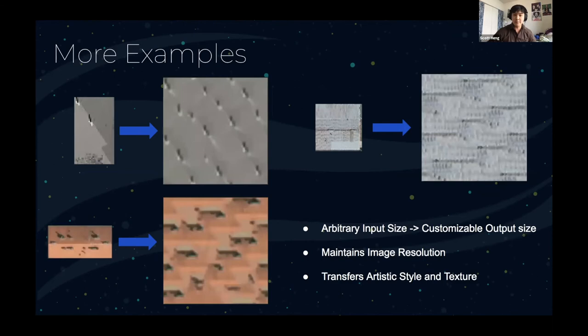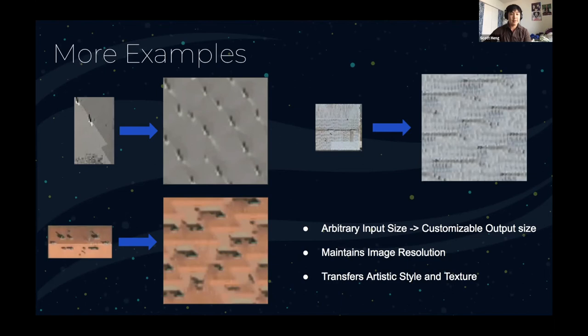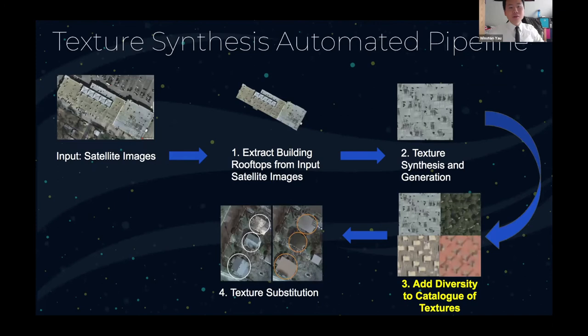The output is pretty accurate to the original image, and this extends to different kinds of roofs with different textures and colors. This model is powerful because: first, regardless of input size, we can always generate an output texture with a standardized size; second, it maintains image resolution so no matter how small your input roof could be, output size is always the same; and lastly, it accurately transfers artistic styles and textures. We now apply this technique across all five cities in the INRIA public dataset to create a synthetic texture database.